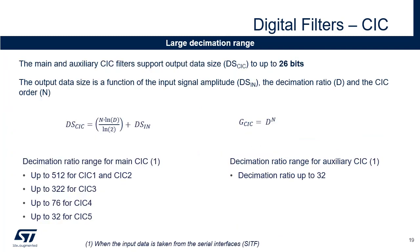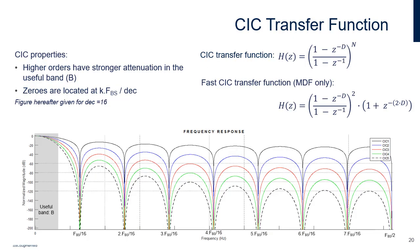The CIC data size is fixed to 26 bits. The gain of a CIC filter depends on the decimation ratio D and on the order N. The same applies to the data size. The decimation ratio and the order must be adjusted in order to avoid having a signal amplitude larger than 26 bits at the output of the CIC filter. In order to satisfy this requirement, this slide indicates the maximum decimation according to the order of the filter. CIC N is a filter of order N. The CIC has a very simple filter structure based on adders. Higher orders attenuate high-frequency components more but also introduce a droop in the useful band. The amount of zeros depends on the decimation ratio and the zeros are a multiple of FBS divided by decimation. The figure represents the frequency response of CIC filters assuming a decimation ratio of 16.